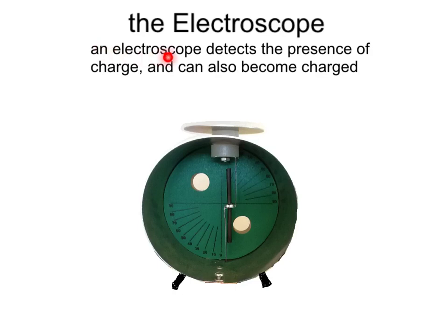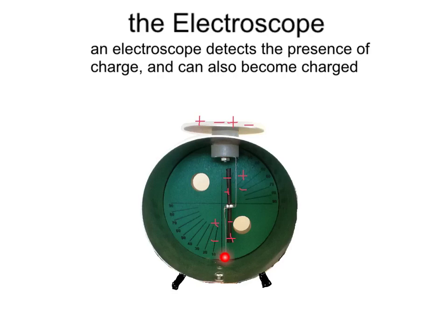The electroscope. An electroscope detects the presence of charge and can also become charged. It is a metal cylinder with a metal plate at the top connected by a metal screw to a metal holder, on which sits a conductive straw that is free to rotate by a little pin. At this time, the electroscope is neutrally charged — it has the same number of positive charges as negative, present on the plate, the holder, and the straw itself. In class, you'll be challenged to draw the different distribution of charges throughout the electroscope when you polarize it and also demonstrate the methods of charging, including contact and induction.